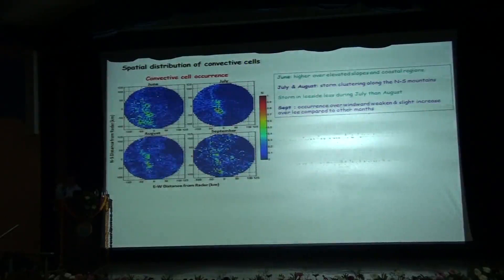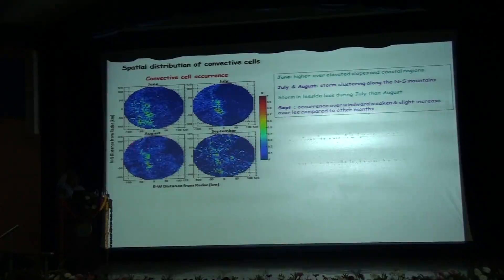This figure shows the spatial distribution of the convective cells on a month-to-month basis. For the month of June, we see higher occurrences over the elevated slopes and coastal regions. For the month of July and August, we see the storms clustering nicely along the north-south mountain ranges. And in September, the storm occurrences slightly increased over the lee side and they are basically scattered.